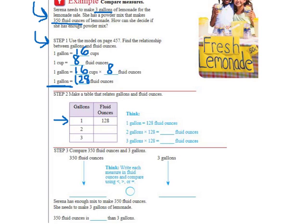So if we had two of those, 128 plus 128 would be 256 fluid ounces. And then if we were to find three gallons, because that's what our question asks, it would be 128 plus 128 plus 128, or three times 128, which is 384 fluid ounces.